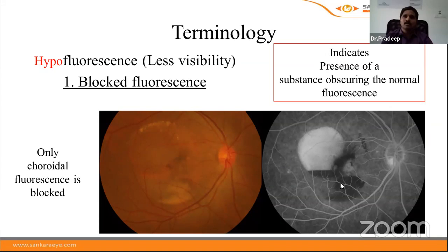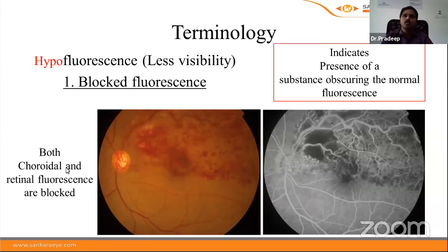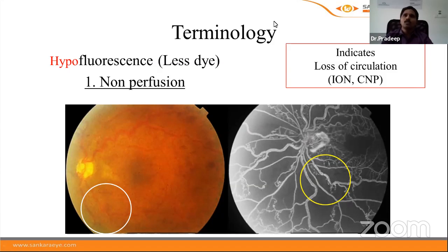The second subtype of block fluorescence involves both choroidal and retinal fluorescence being blocked — seen with extensive superficial retinal hemorrhages. To differentiate the two: if only choroidal fluorescence is blocked, the retinal vasculature is visible and the structure is in the deeper retinal layers or subretinal space. If both retinal and choroidal fluorescence are blocked, the structure is in the superficial retinal layers or pre-retinal space.